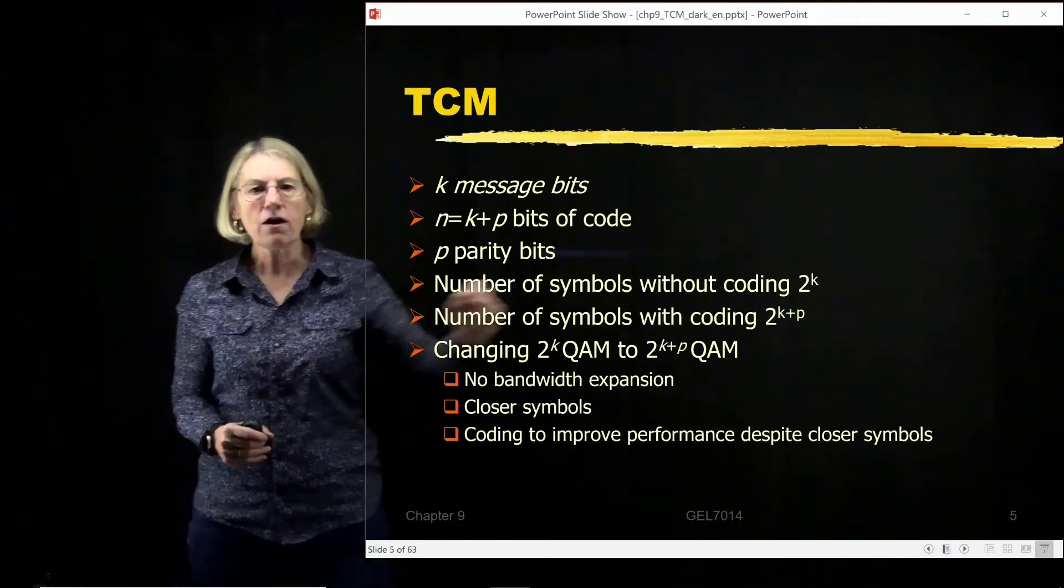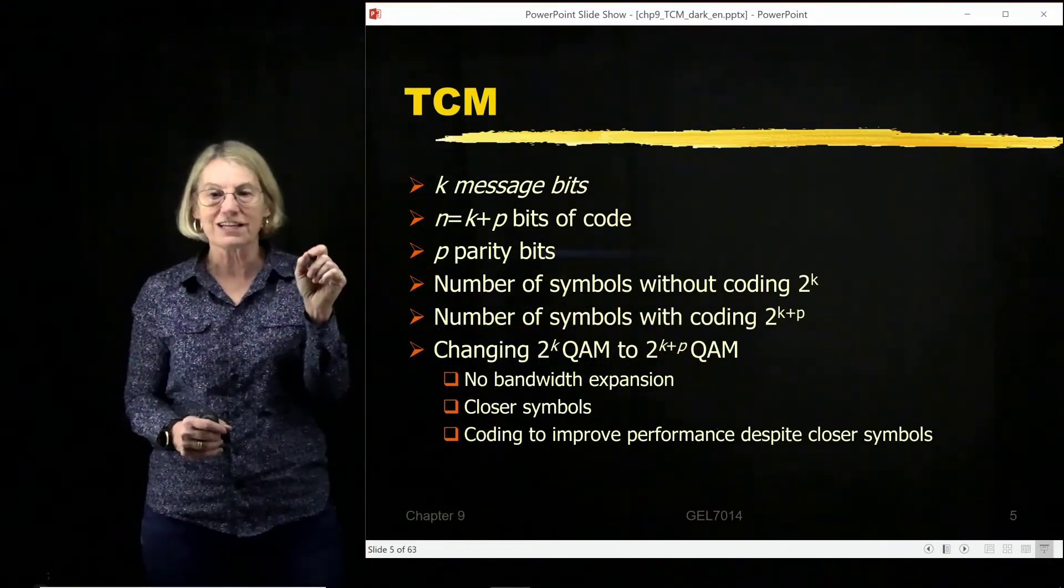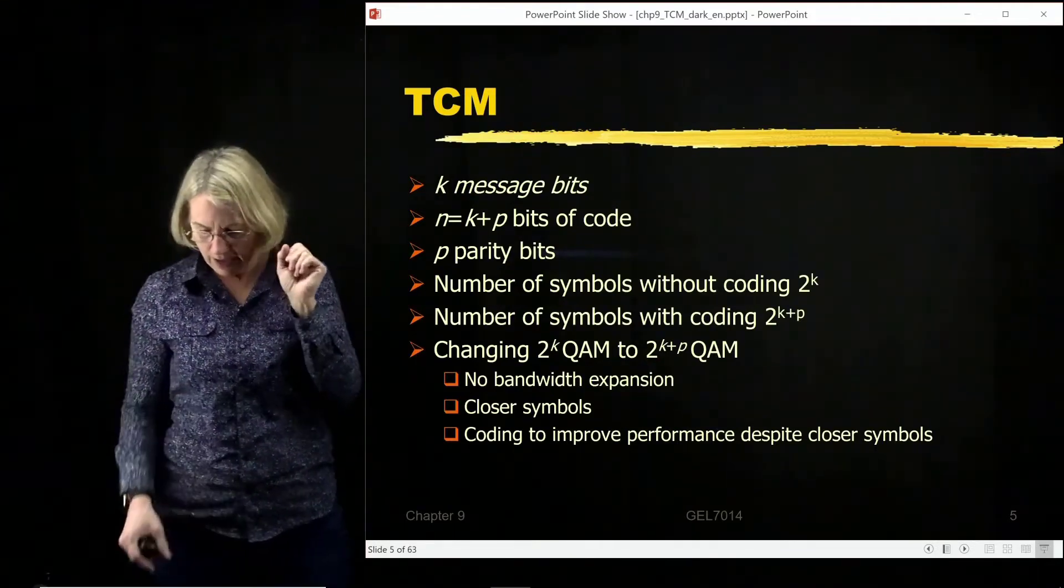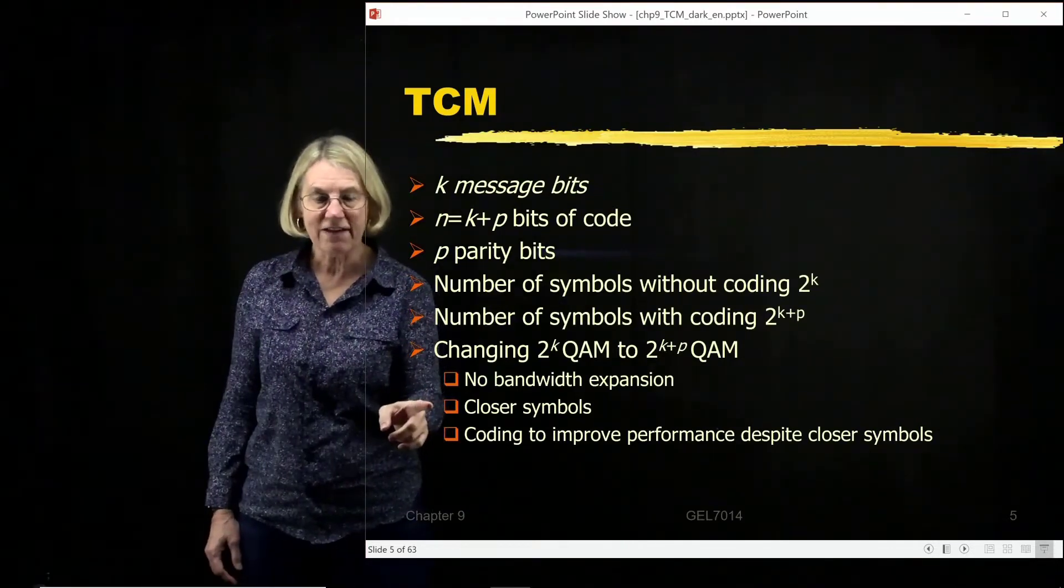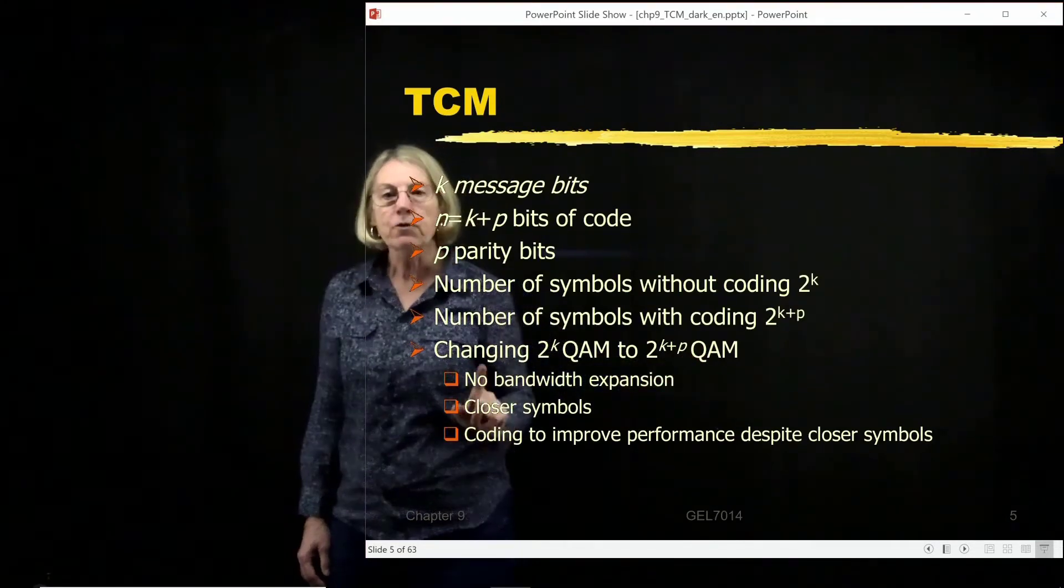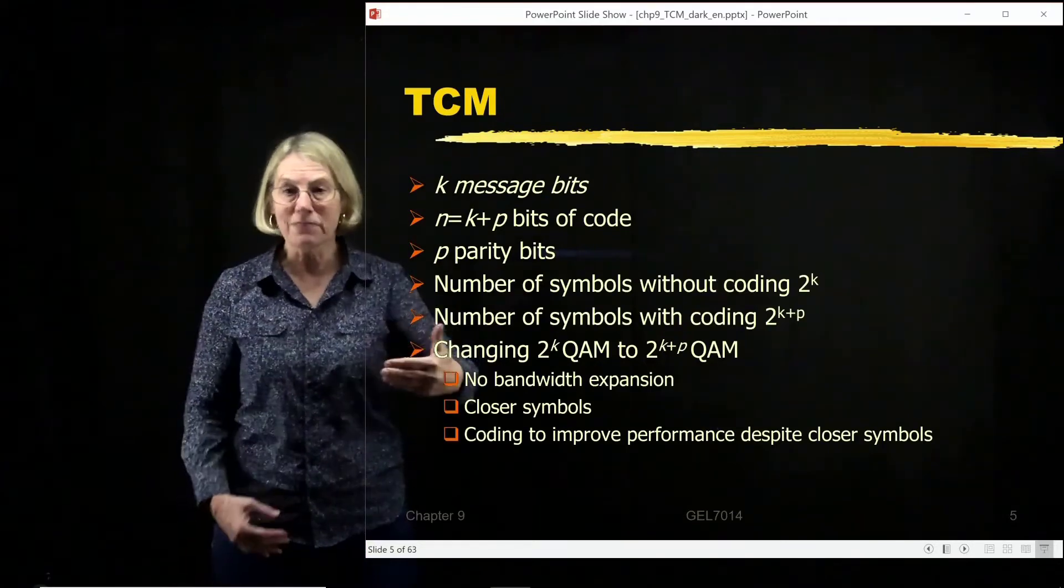This means there's no bandwidth expansion. Of course, because I'm doing a larger QAM, that means that each one of the symbols in the constellation is going to be closer. So now what I'm doing is I'm taking this idea of I'm going to have closer symbols because I'm going from 2K to 2K plus P and I'm going to put my coding in in a way to overcome that.